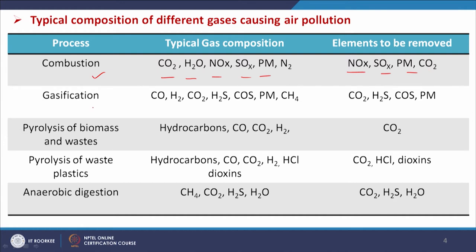Similarly, through a gasification process we can get different gases in the produced gas stream, like carbon monoxide, hydrogen, CO2, H2S, COS, PM, and CH4. These are the major components and we need to remove carbon dioxide, H2S, COS, and PM. Through pyrolysis of biomass and waste, the gas that comes out to the environment contains carbon monoxide, carbon dioxide, hydrogen, and hydrocarbons, and we need to remove carbon dioxide from this.